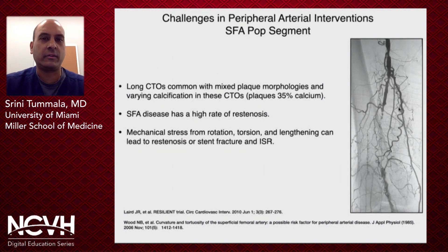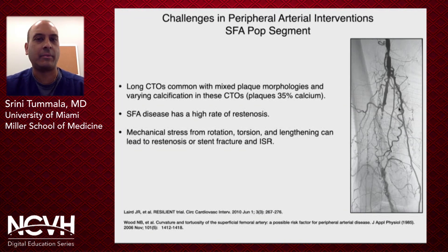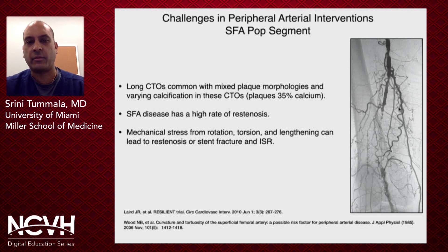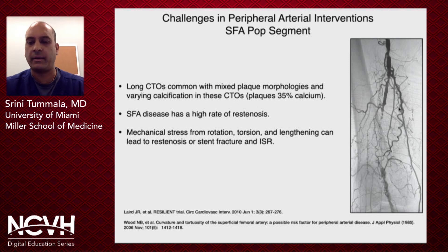We do have challenges, especially when dealing with different vessel segments. When it comes to the femoral popliteal segment, you're dealing with long CTOs, commonly with mixed plaque morphology. Sometimes about 35% of these are calcified. We know there's a high rate of restenosis in the SFA, largely due to mechanical stress from rotation, torsion, and lengthening, which can lead to restenosis or even stent fracture and ISR.